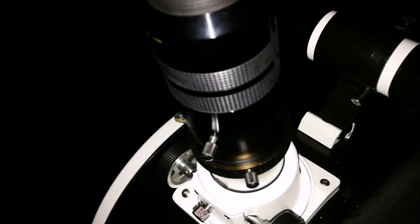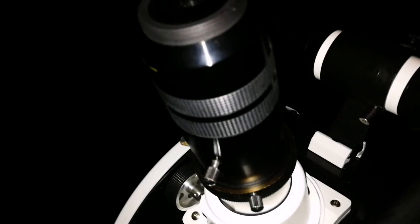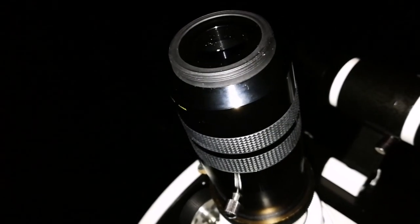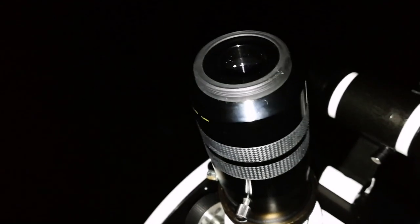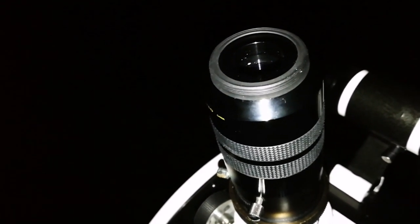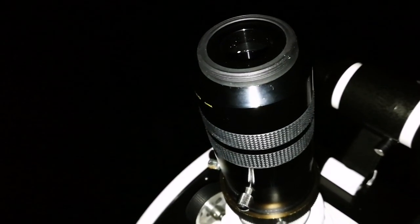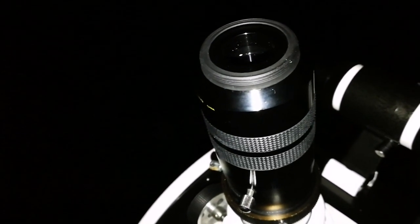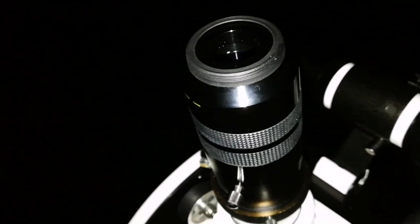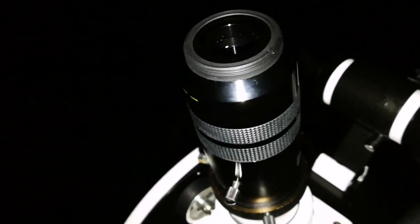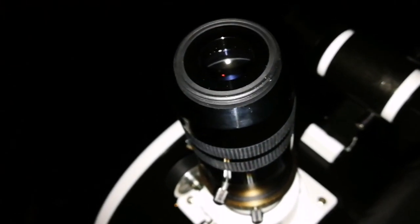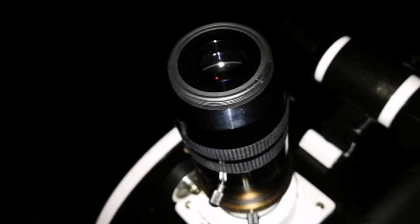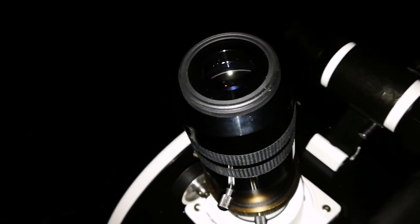I'm using now the Meade Super Plossl 56 millimeter eyepiece. It's quite wide field for this purpose. It gives me the lowest magnification possible. I can see more of the nebula in the field of view without moving it too much.